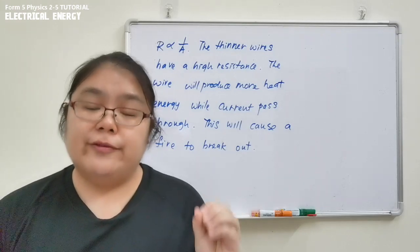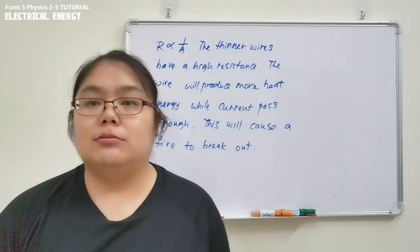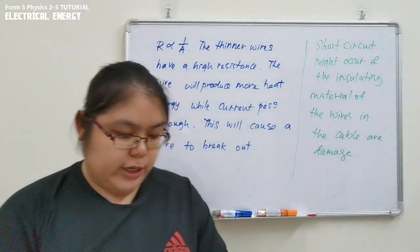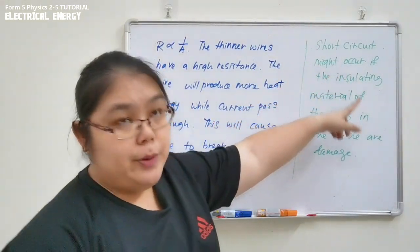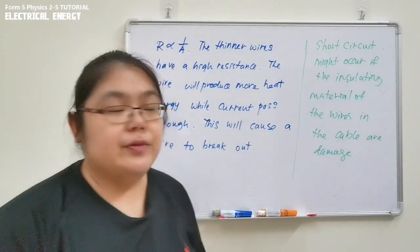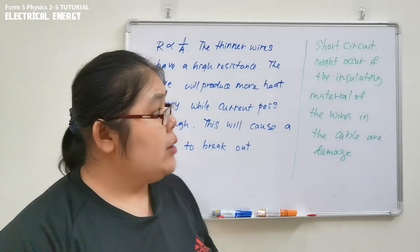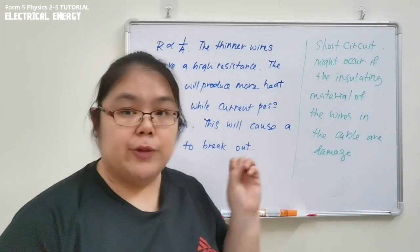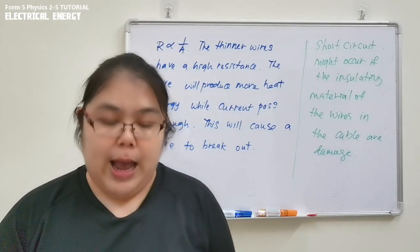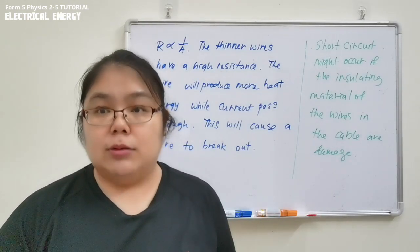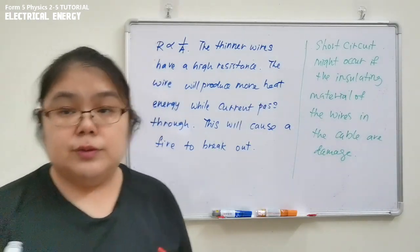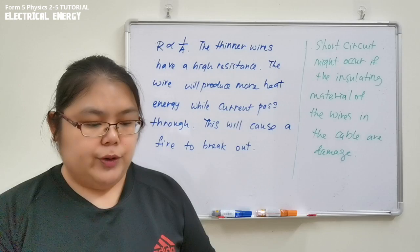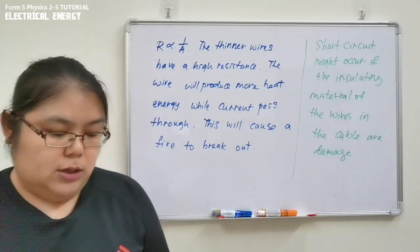A short circuit may occur if the insulating material of the wires in the cable is damaged. When a short circuit occurs, a very large current flows, causing the fuse to melt. This cuts the circuit and prevents further damage or fire to the house.